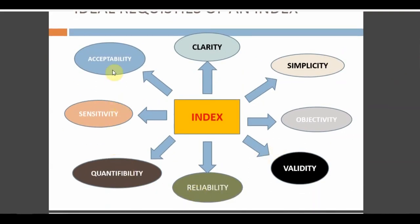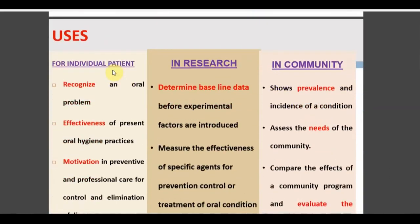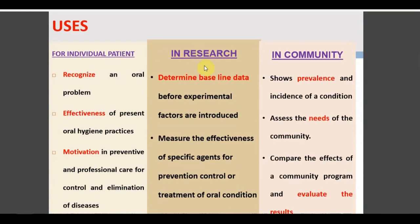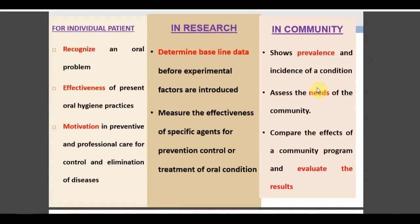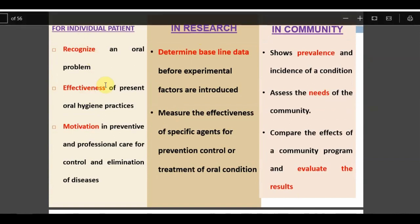An index has many uses: it can be used for individual patients, in research, and in the community. In the community it can detect prevalence; in research it establishes baseline data through proper examination. For individual patients, we can compare oral hygiene status before and after instructions. It can also be used to motivate patients — comparing indices results can convince patients that their oral hygiene has improved.